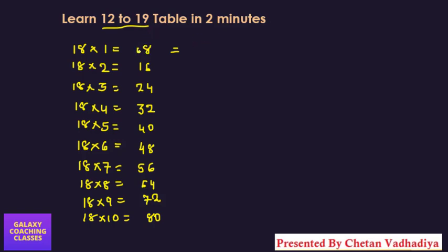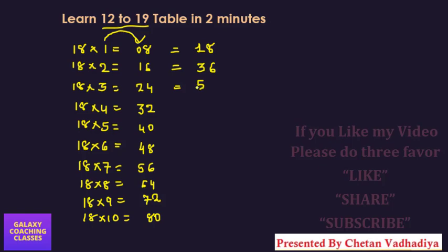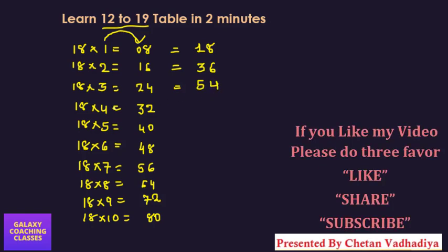Just what you need to do is write down this last term at the last. But what about first term? Just you need to add this one with this: 1+0=1 and 8 at the last. Now 2+1=3 and this 6 at the last. Now 3+2 will give you 5 and 4 at the last. Now 4+3=7 and 2 at the last. Now 4+5=9 and this 0 at the last.